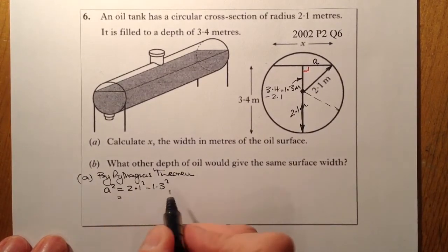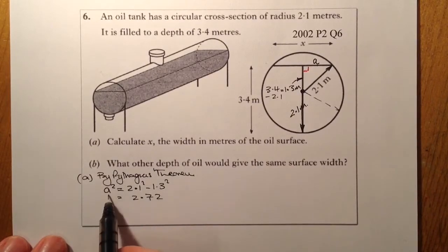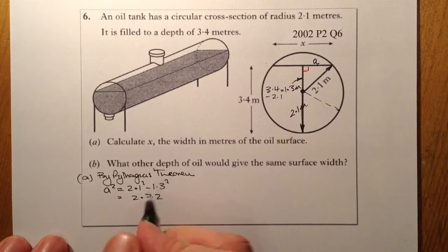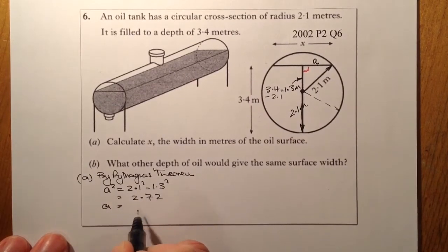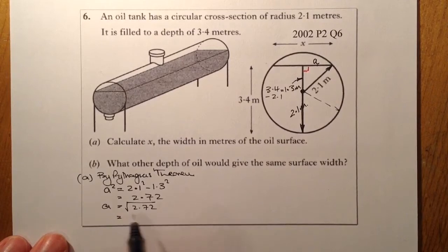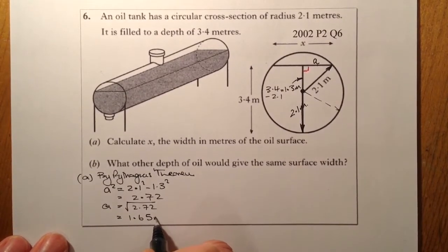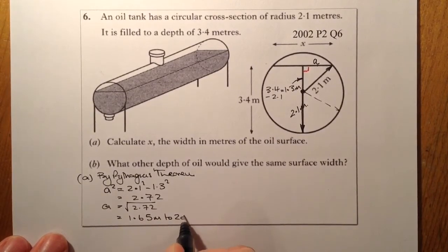If I put that into my calculator, what I'll get is 2.72, and that's what A squared will be. So for A squared, I'll then find out what A is by taking the square root of it. And from there, what I should get is 1.65 metres, and that's to two decimal places.